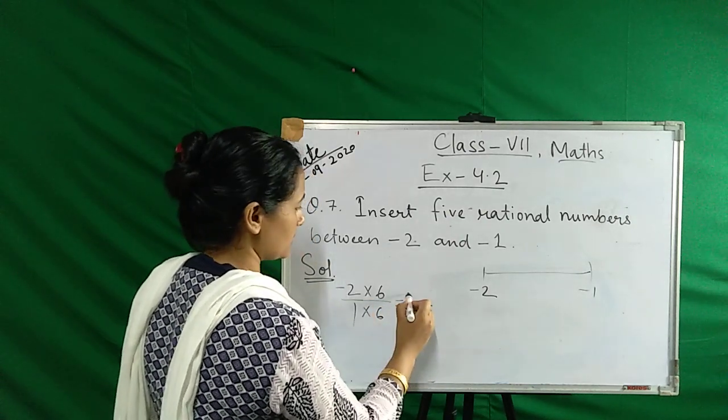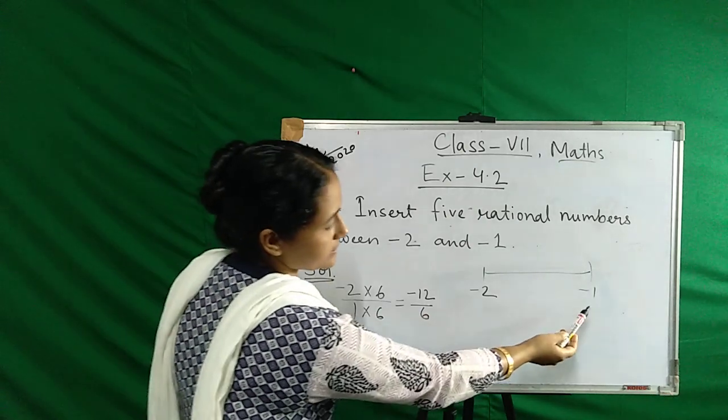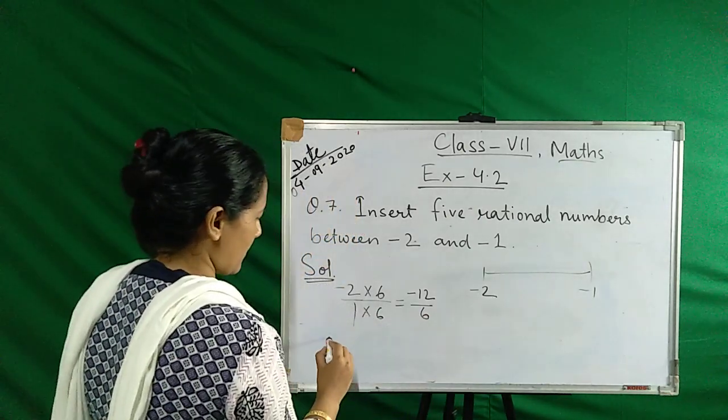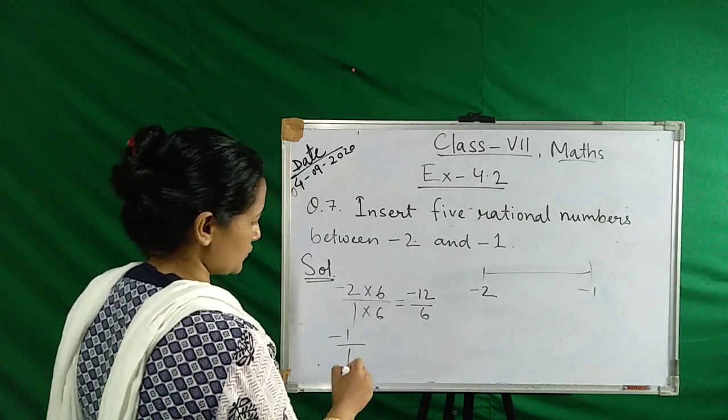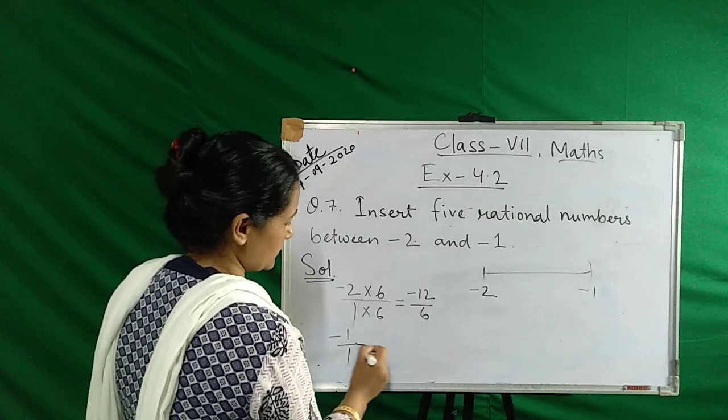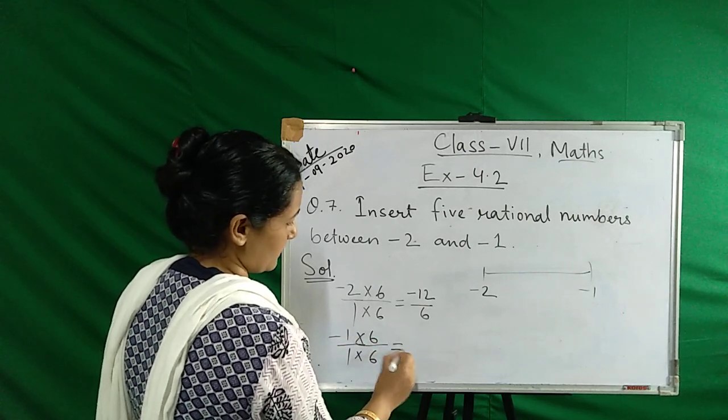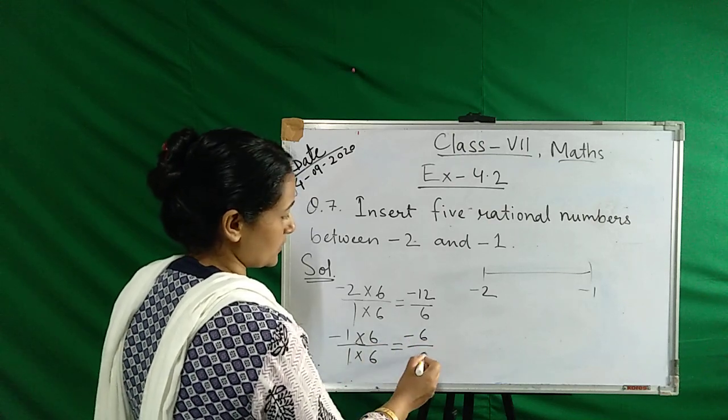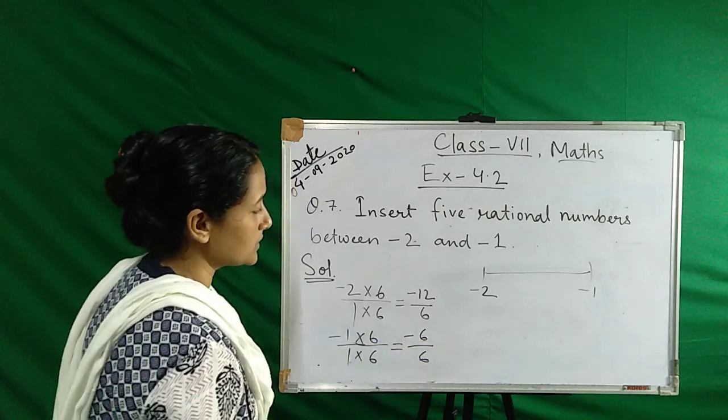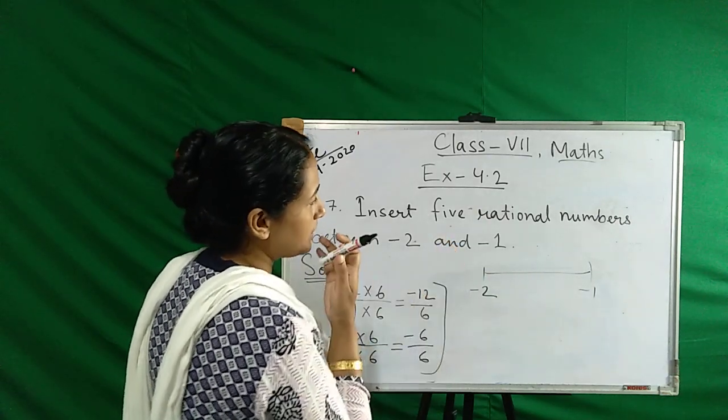When we multiply with 6, the answer will come minus 12 over 6. And our next number is minus 1, and denominator is also 1. Multiply with 6, minus 6 over 6.